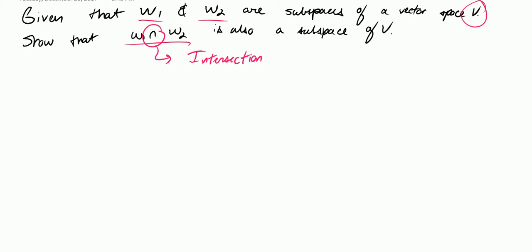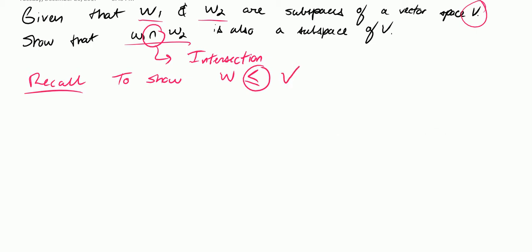First, a quick recall on how exactly you're supposed to show that something is a subspace of another thing. To show that W is a subspace of V, you need to show three things. The first thing to show is that the zero vector, or zero element, belongs to — is contained in — W.